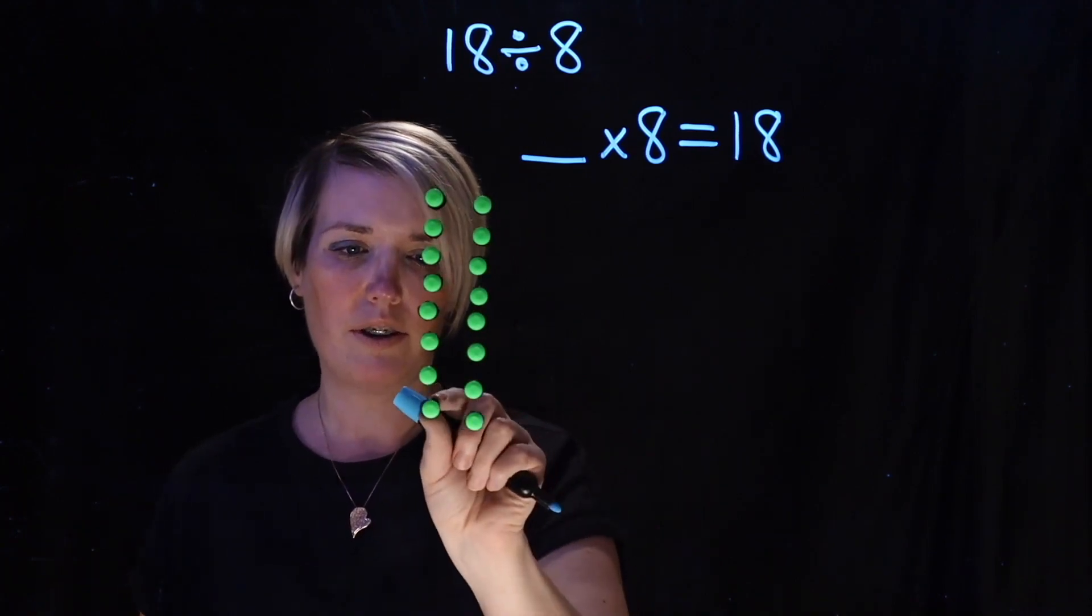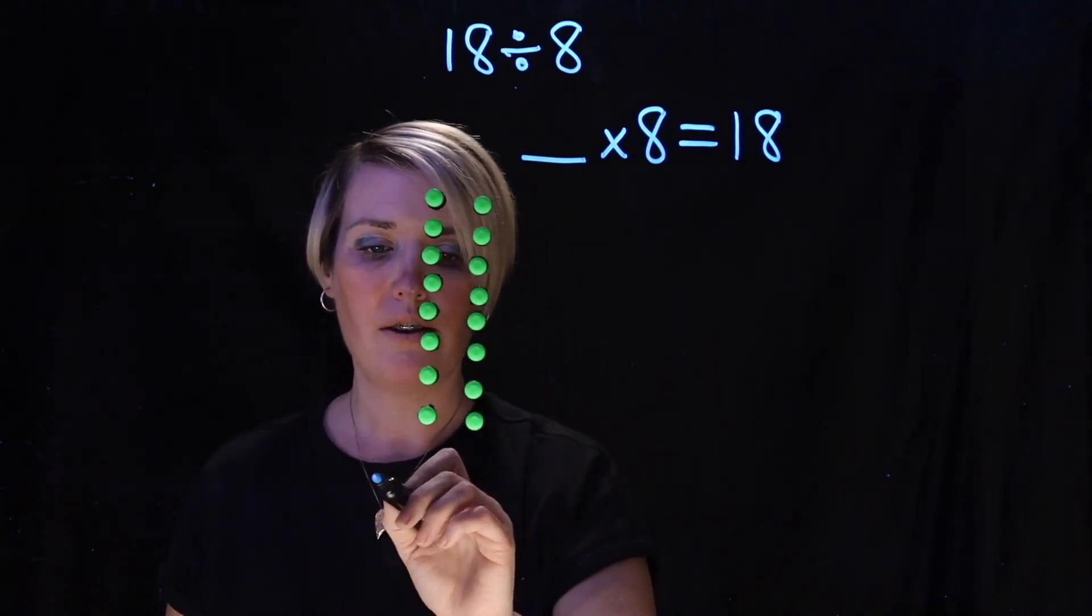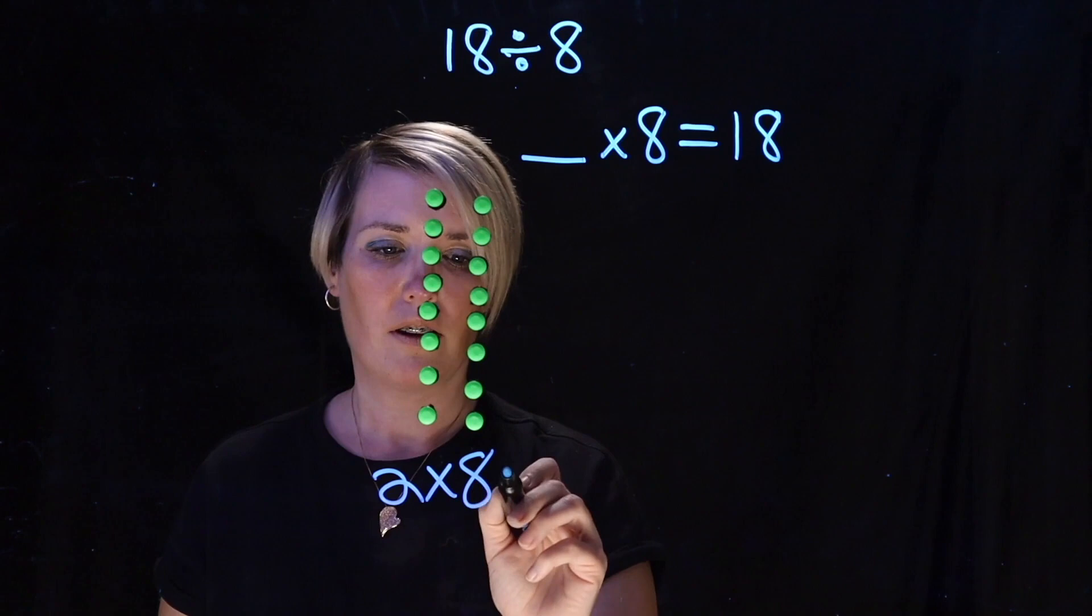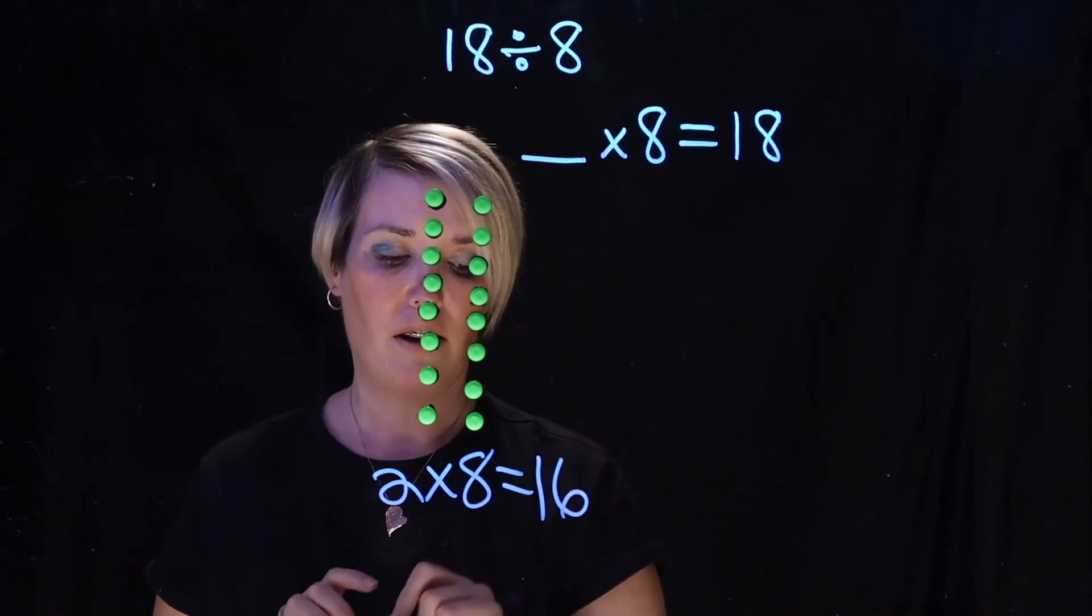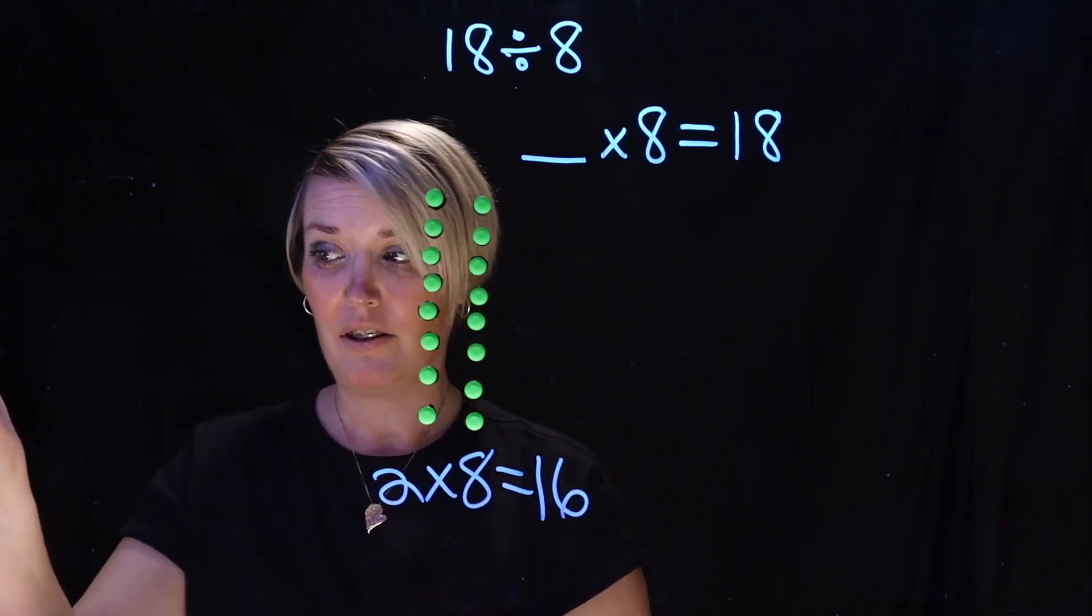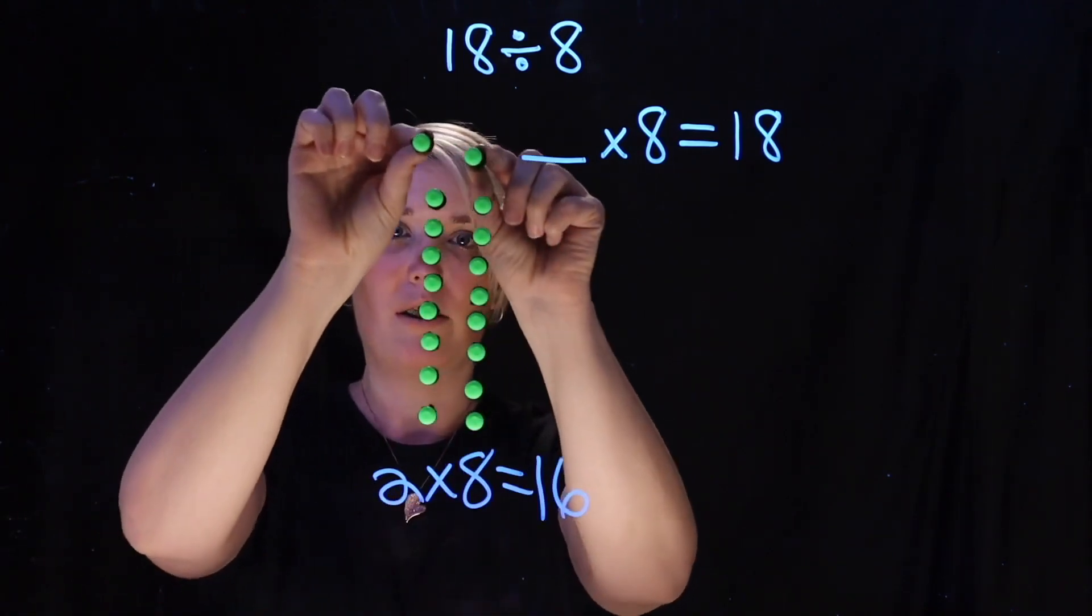Okay, so he said that he knows that 2 groups of 8 equals 16. But that's not quite 18. There's still 2 more that he needs to bring out.